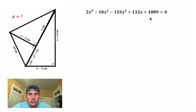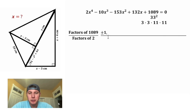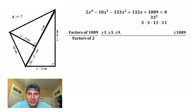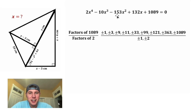If there are rational solutions, by the rational root theorem they would be factors of 1089 divided by factors of 2. Now 1089 equals 33 squared, which breaks into primes 3 times 3 times 11 times 11. So the factors are plus or minus: 1, 3, 9, 11, 33, 99, 121, 363, and 1089. The factors of 2 are just plus or minus 1 and plus or minus 2. So let's test some of these factors using long division.